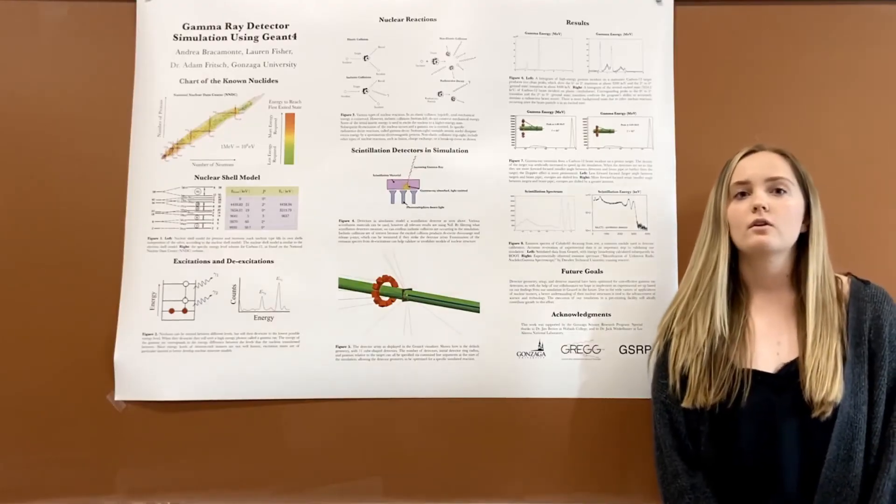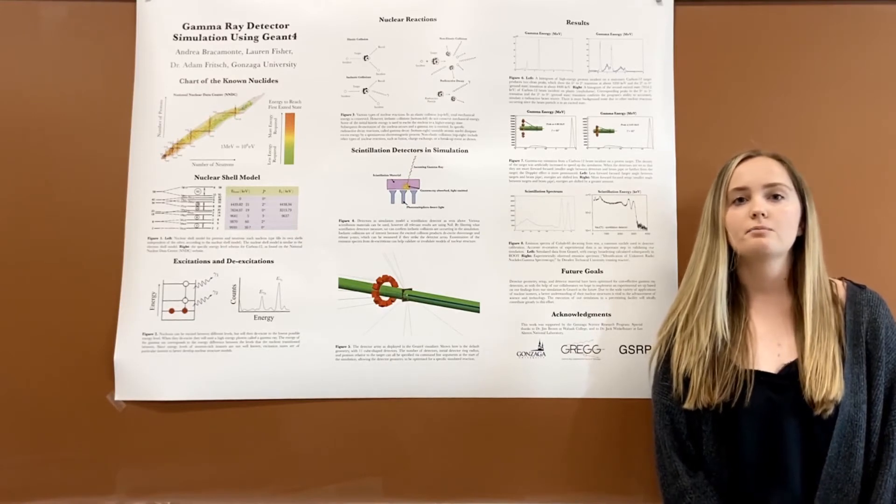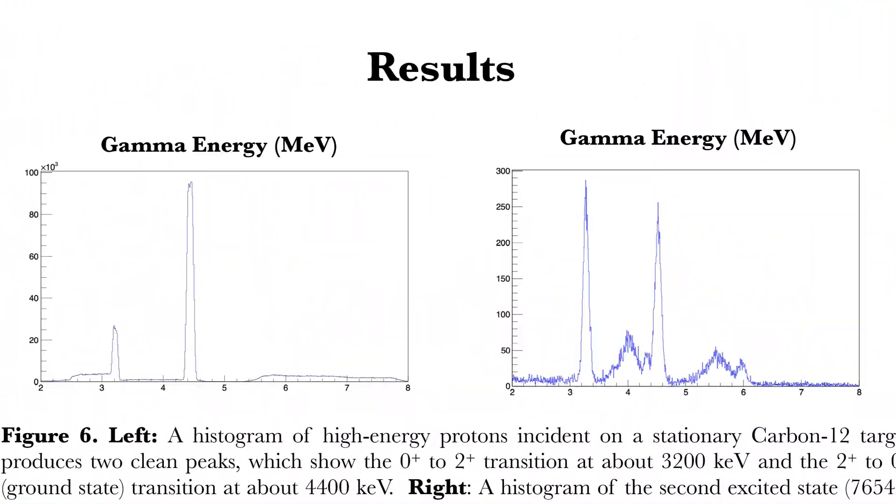One of our main goals of the summer was to acquire the functionality to shoot a radioactive beam particle. As you can see in figure six, the right image shows data from the second excited state of carbon incident on a plastic target, and the left, protons on a carbon-12 target.